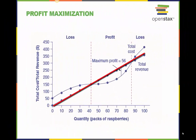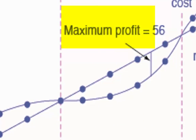Total revenue for a perfectly competitive firm is a straight line sloping up. The slope is equal to the price of the good. Total cost also slopes up, but with some curvature. At high levels of output, total cost begins to slope upward more steeply because of diminishing marginal returns. The maximum profit will occur at the quantity where the gap of total revenue over total cost is largest.